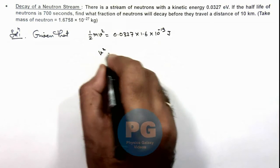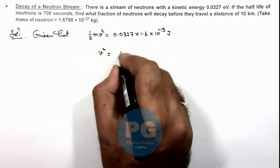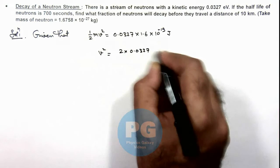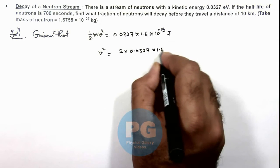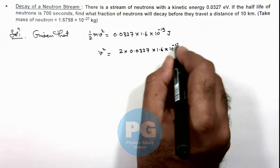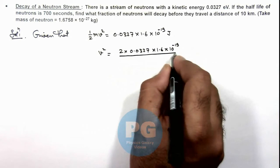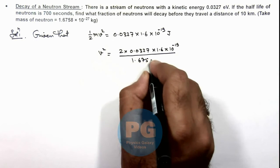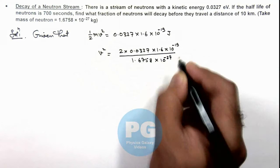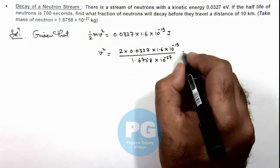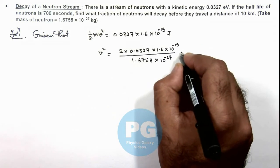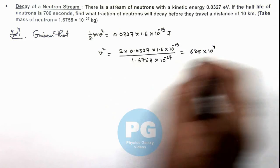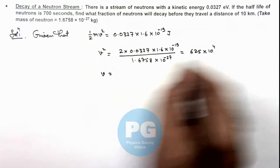And here v squared can be given as twice of 0.0327 multiplied by 1.6 × 10^(-19), divided by the mass which is 1.6758 × 10^(-27) kg. On simplifying, this will give us 625 × 10^4. So the speed we are getting is square root of this value.